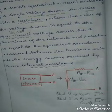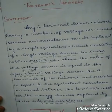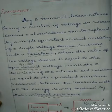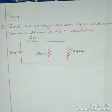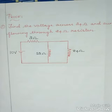This is all about Thevenin's theorem — the entire circuit is replaced by a Thevenin's voltage in series with a Thevenin's resistance across the terminals A and B. Now we can see the proof for Thevenin's theorem. We will first solve a circuit using mesh or nodal analysis and verify that both solutions give the same result.